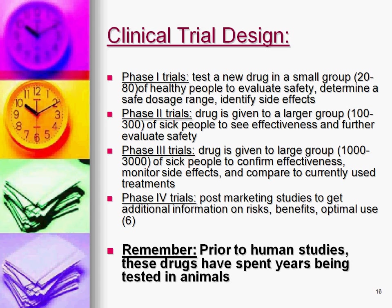More about clinical trial design — this is about the different phases of clinical trials. At different phases, we are looking for different things. Phase one trials test a small group of healthy volunteers, 20 to 80 volunteers, and this helps us to evaluate safety, determine dosage range, and start to look for side effects.